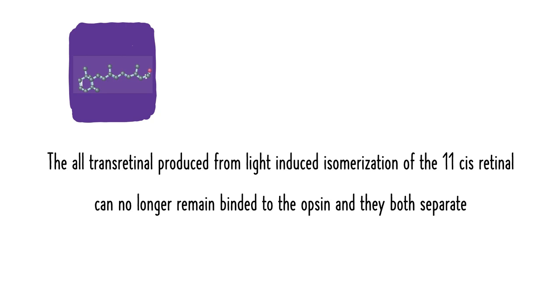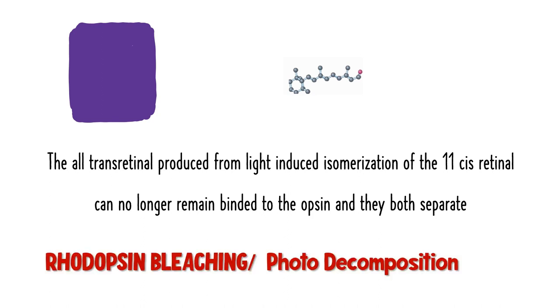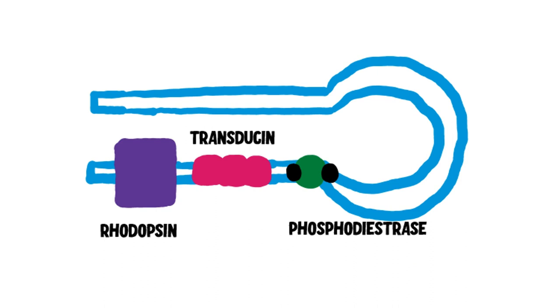Activated rhodopsin, which now has all-trans retinal in it, becomes metarhodopsin 2. At this point, opsin and all-trans retinal cannot remain together and separate from each other. This light-induced separation of opsin from all-trans retinal is called rhodopsin bleaching or photodecomposition.